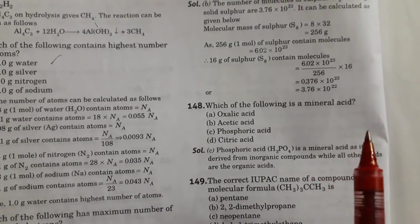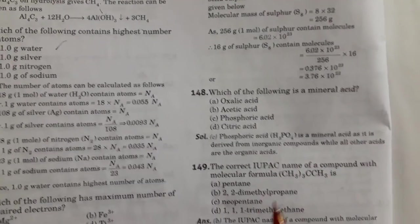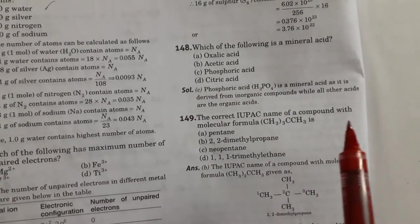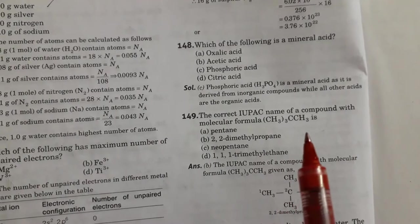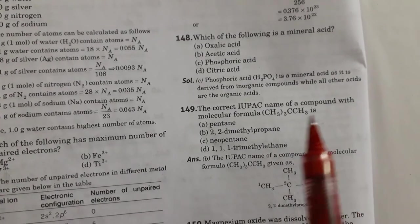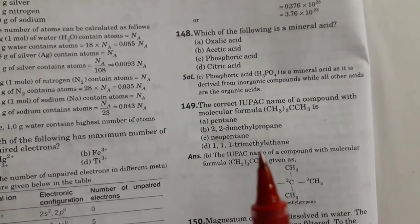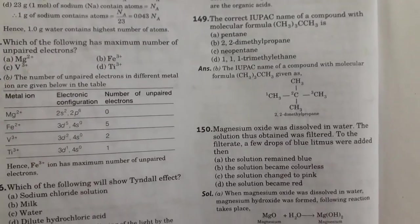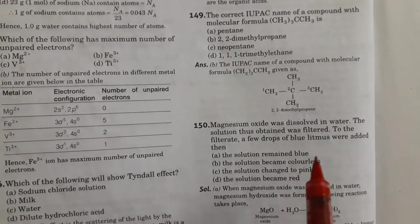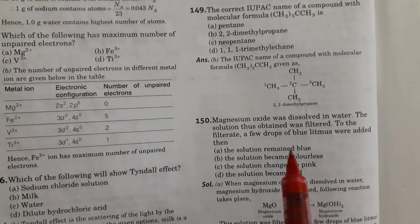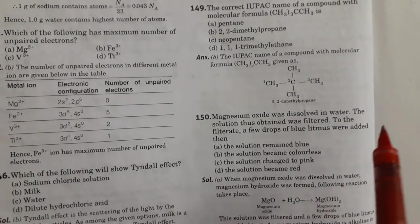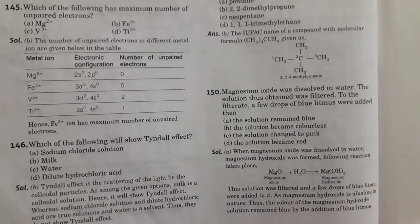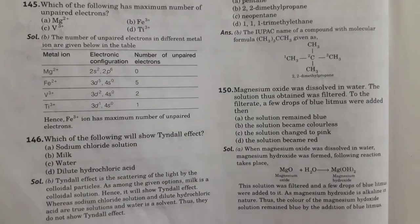Then which of the following is a mineral acid. So phosphoric acid is your mineral acid. Option C is right. Next question is the correct IUPAC name of compound with molecular formula CH3, 3, C, CH3 is 2,2-dimethylpropane. Option B is right. Last question is magnesium oxide was dissolved in water. The solution thus obtained was filtered. To the filtrate a few drops of blue litmus were added. Then the solution remained blue. Option A is right. So this was your biology and chemistry section.